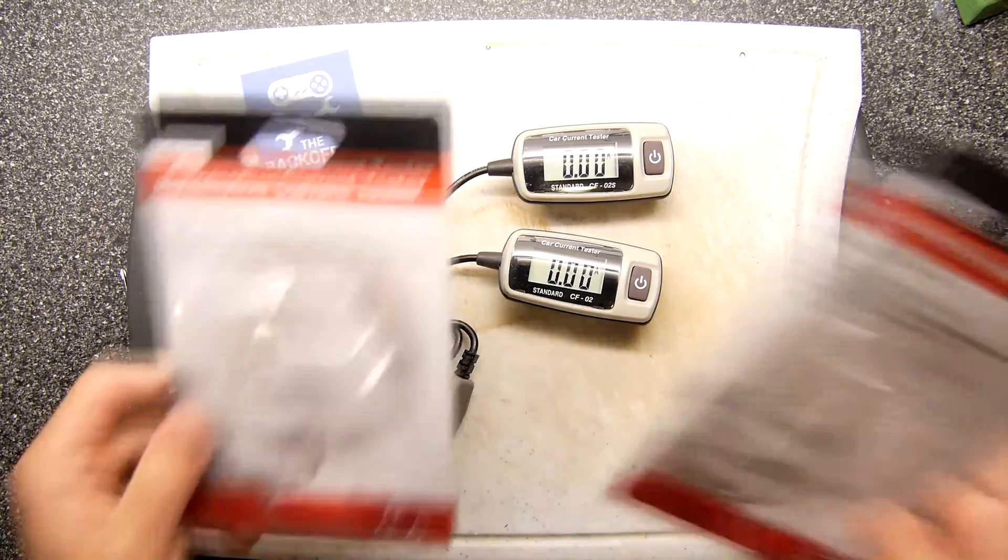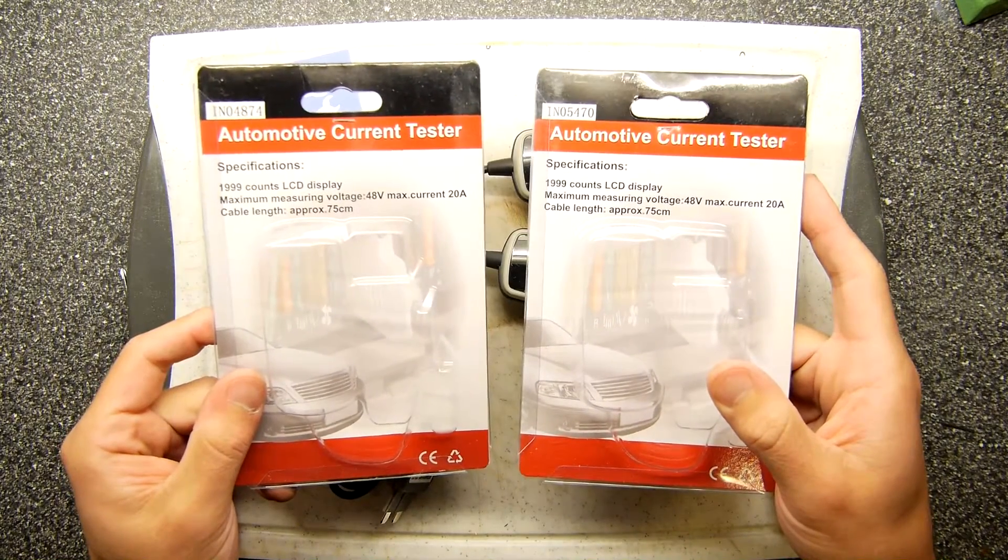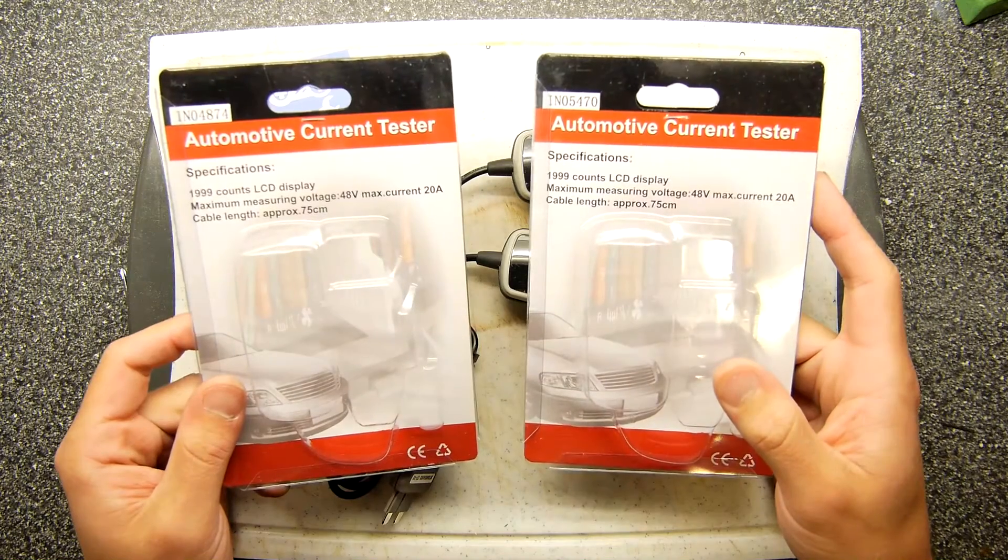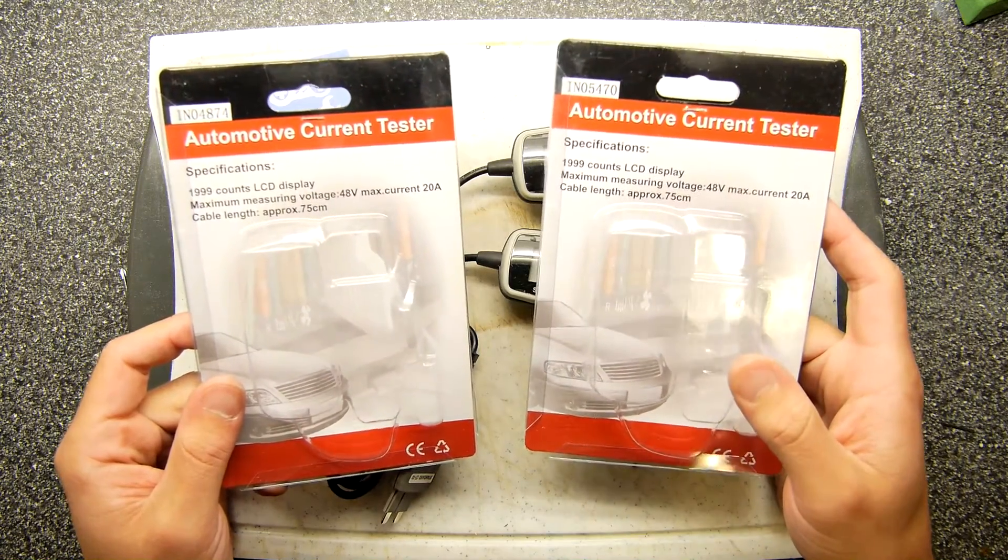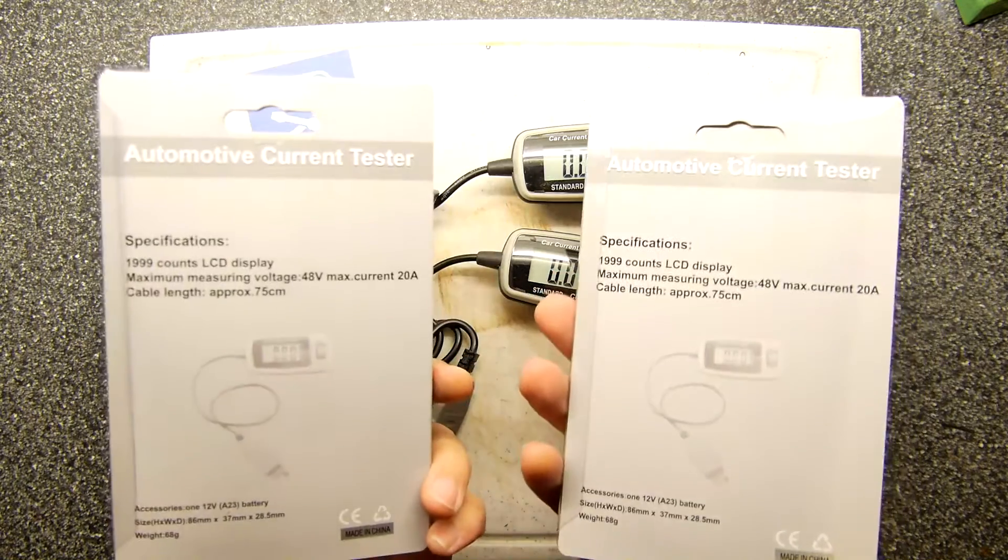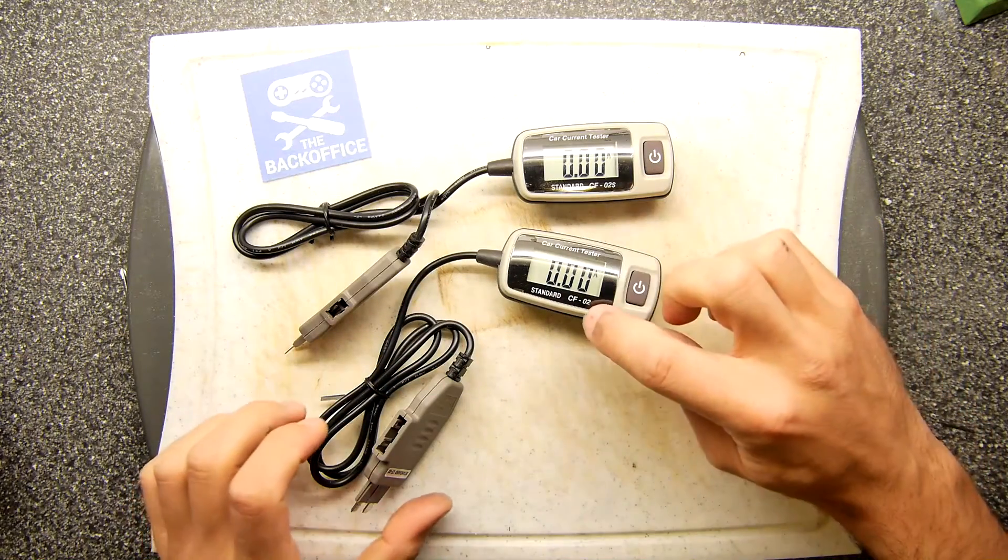So there you have it. The Infuse Car automotive current testers IN04874 for this one and the IN05470 for the other one, and I've sort of mixed up which was the small one and which was the big one. It doesn't really matter, buy both. CF02SS and CF02.